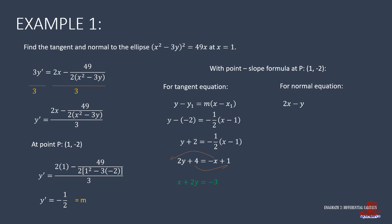For the normal equation, we flip the coefficients to get 2x minus y. Substituting the coordinates — 2 times 1 minus negative 2 — gives 4. So the normal equation is 2x minus y is equal to 4.